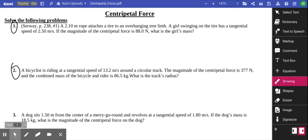The first problem says a 2.1 meter rope attached to a tire, to an overhead tire limb. A girl swings on the tire and has a tangential speed of 2.5 meters per second. If the magnitude of the centripetal force is 88 newtons, what's the girl's mass? So in this particular problem,